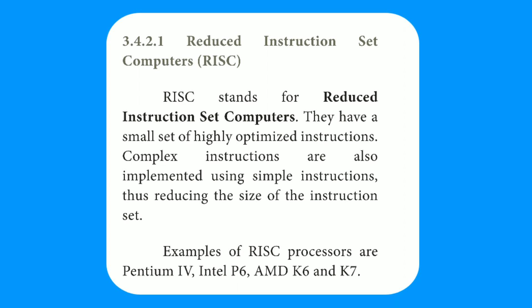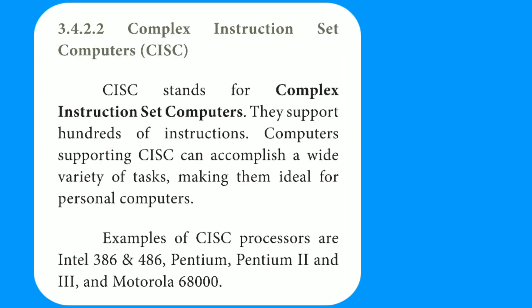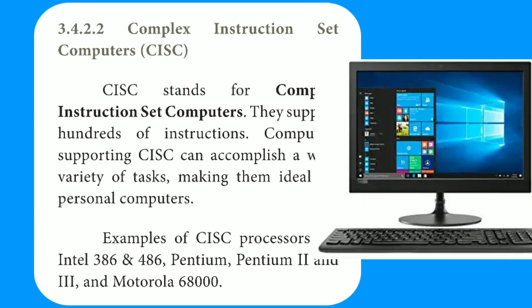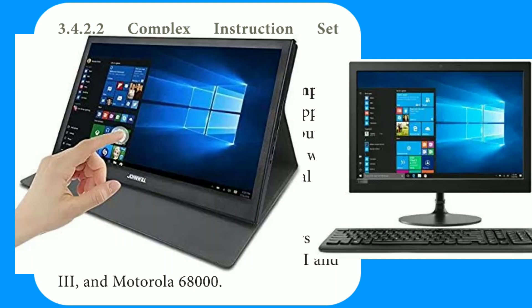Another type is CISC — Complex Instruction Set Computer. CISC stands for Complex Instruction Set Computers. They support hundreds of instructions. Computers supporting CISC can accomplish a wide variety of tasks, making them ideal for personal computers. While RISC computers execute few instructions, CISC computers execute hundreds of instructions. CISC processors are used in personal computers, desktop computers, laptop computers, and supercomputers.